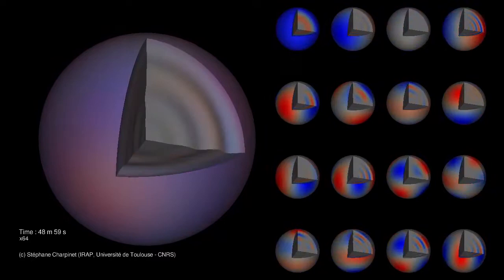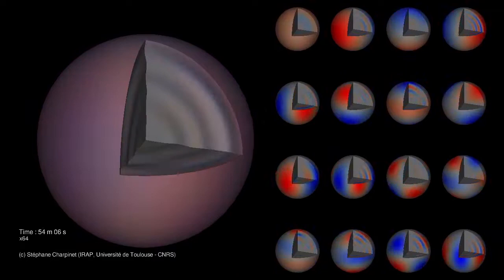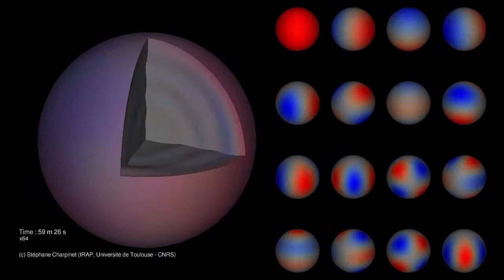The frequencies of the pulsation tell us something about the sizes of the various layers of the stellar interior, while the surface patterns of the pulsation contain information about the local physical conditions: pressure, density, and temperature.